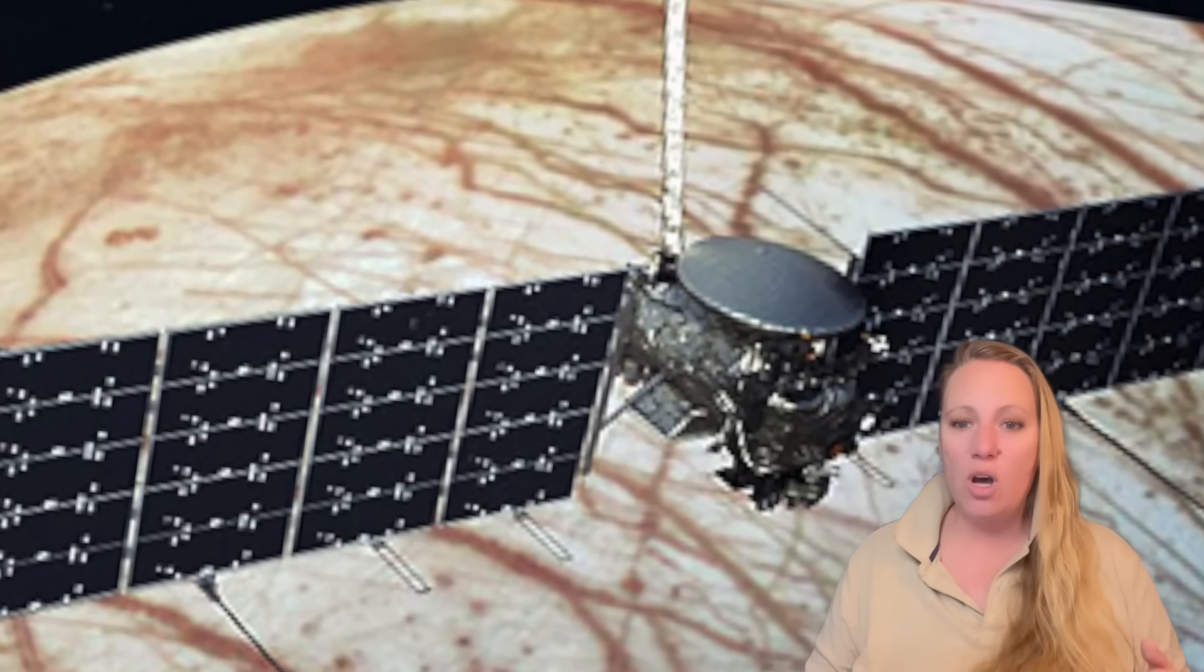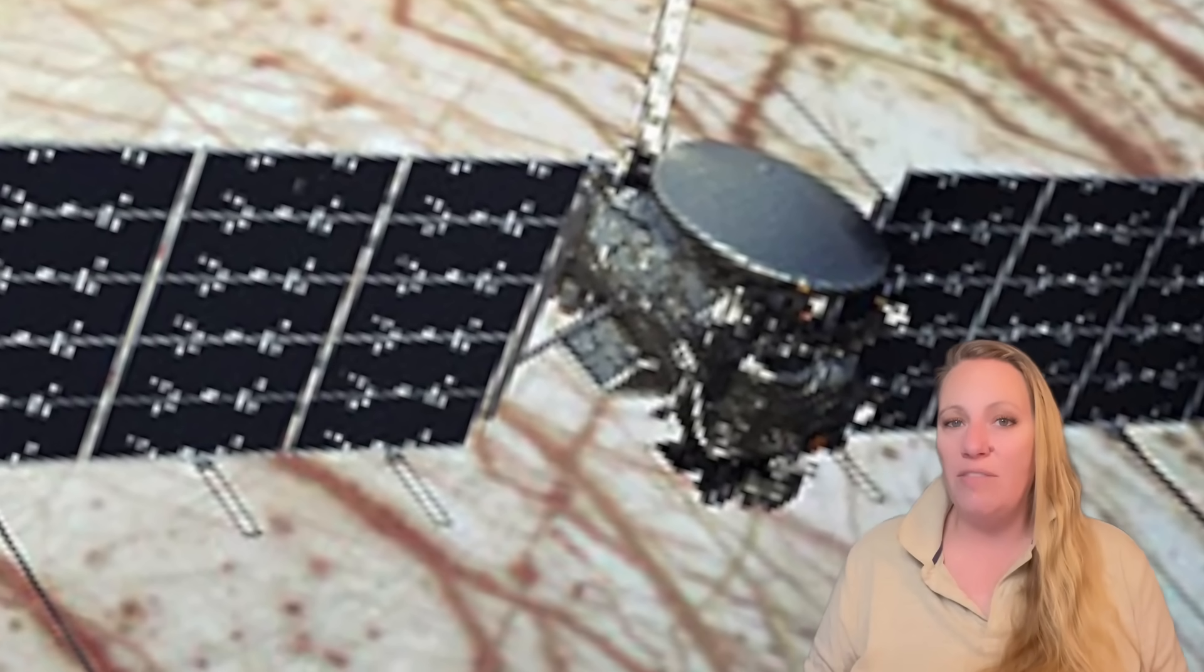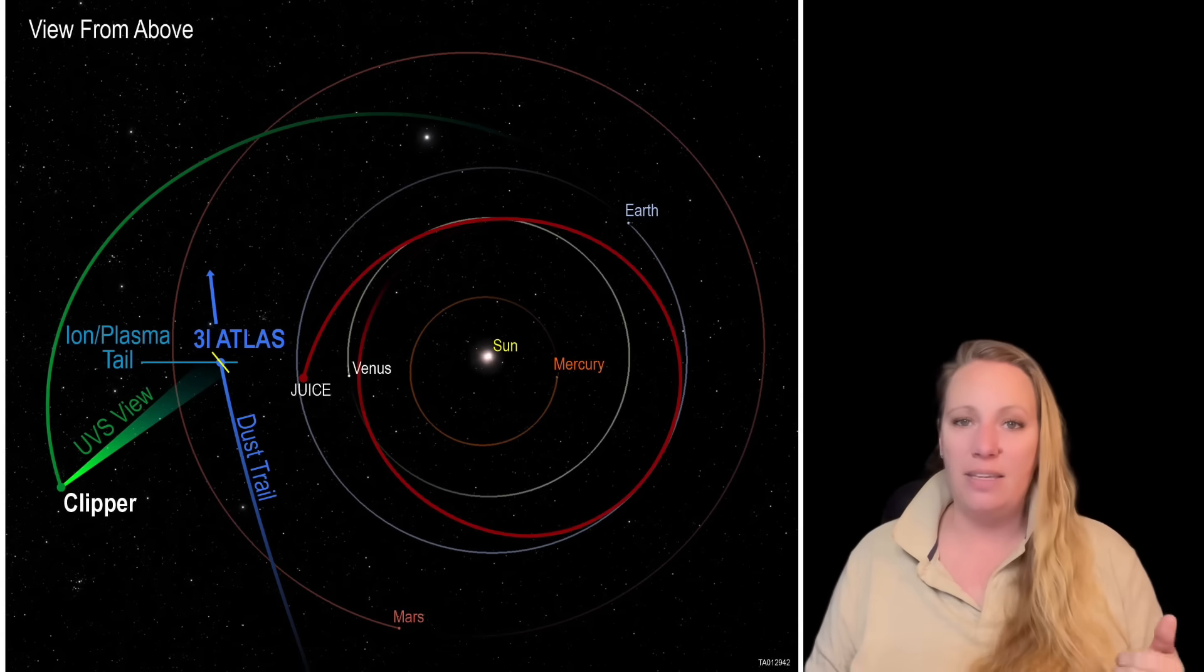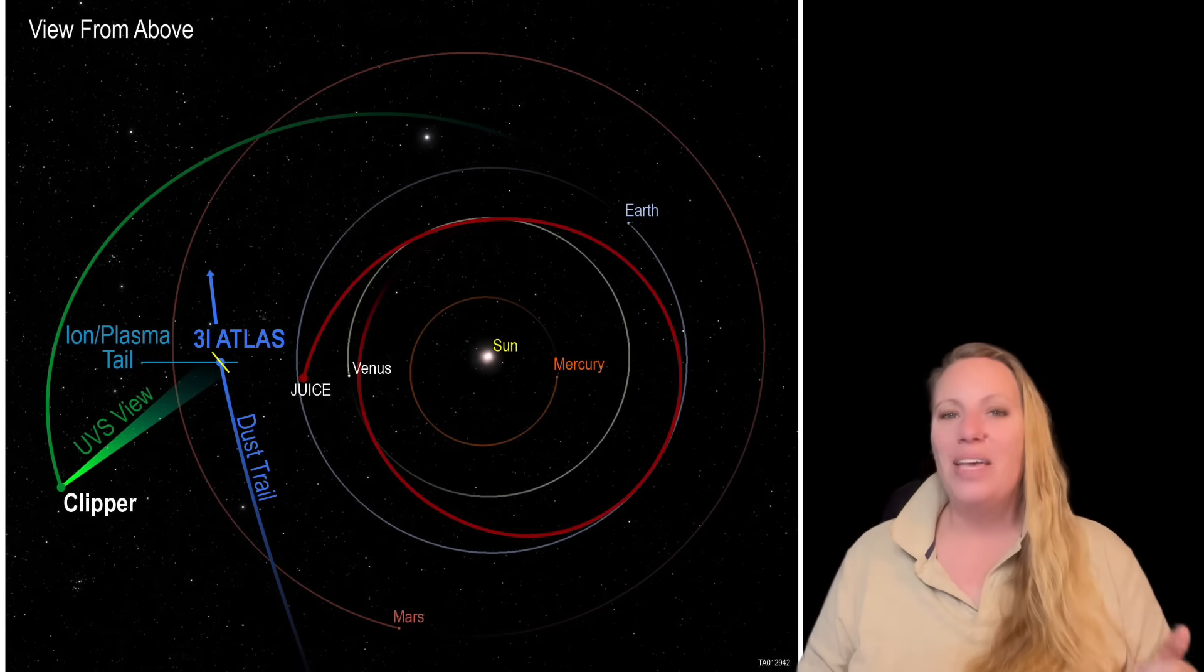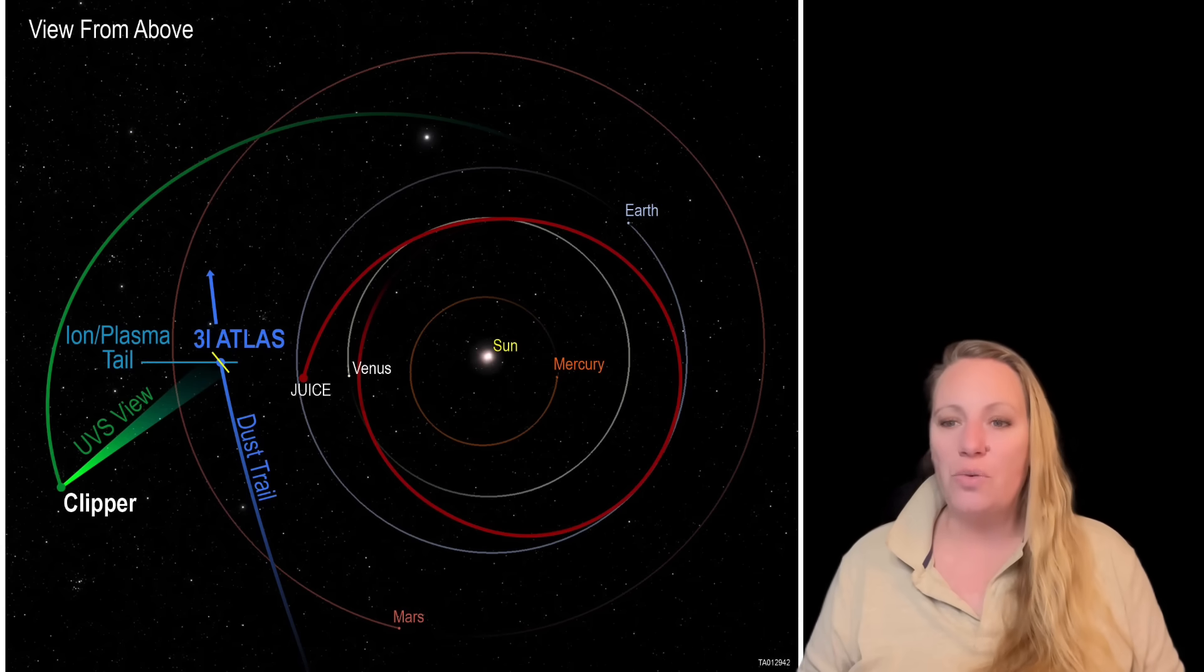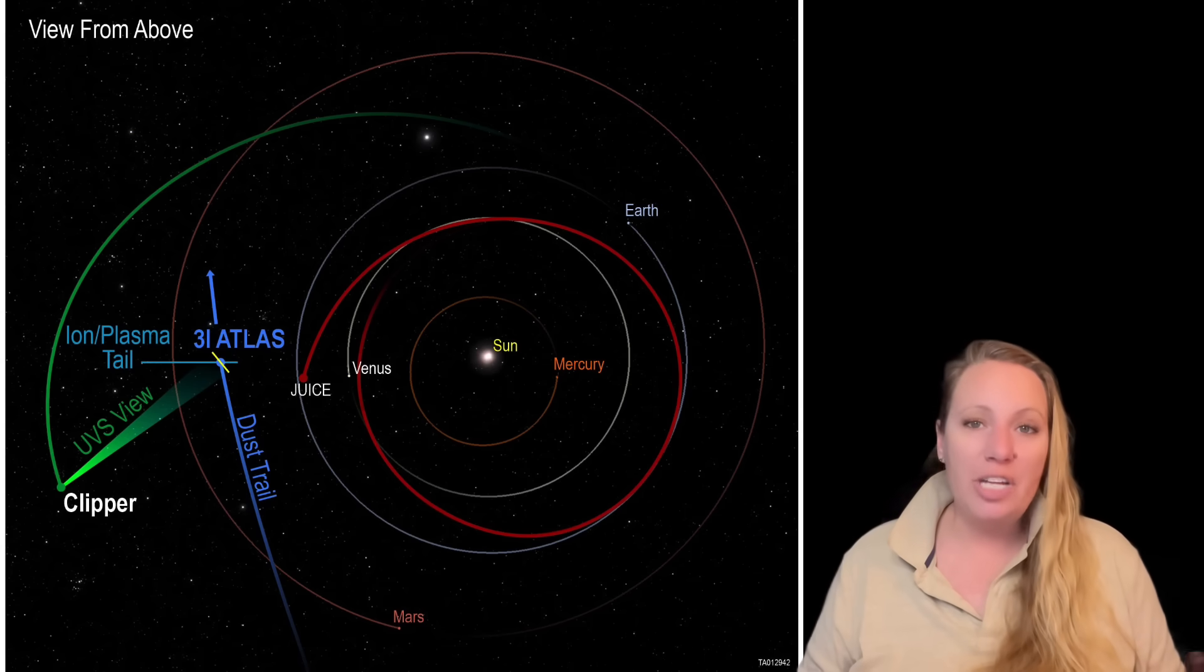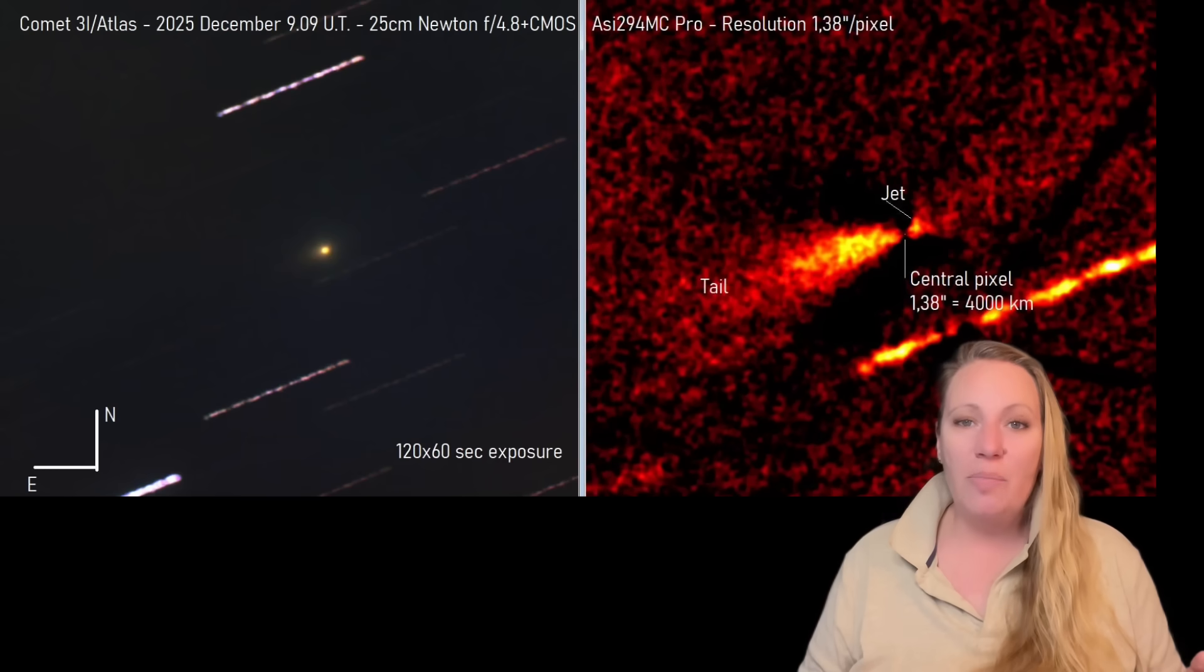And doing so would not have only helped us to better understand the key characteristics of 3i Atlas. Are there little tiny aliens on it? But no, we could have also photographed its surface and potentially collect our first ever interstellar samples.